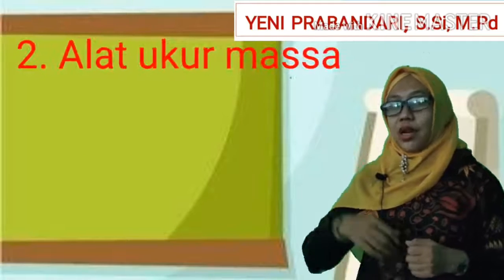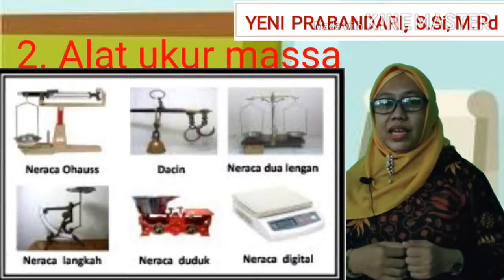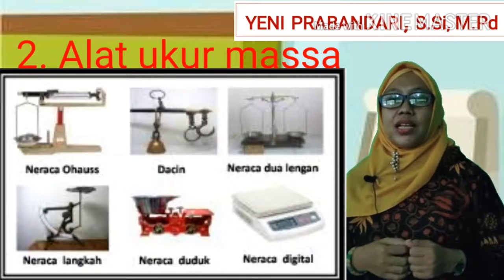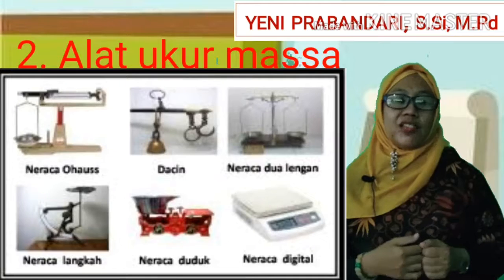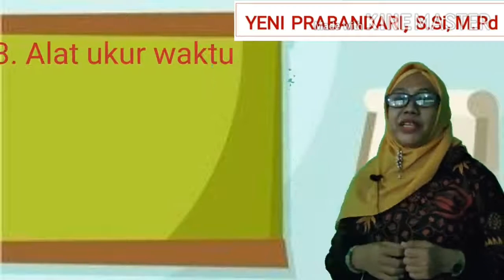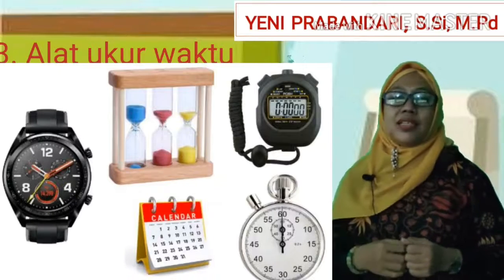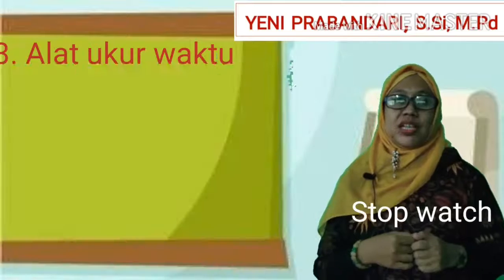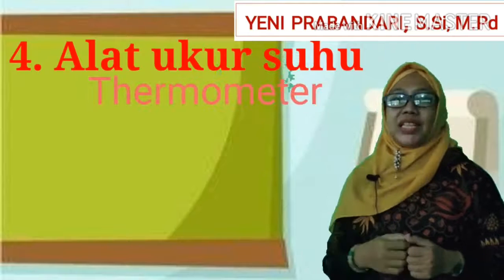Yang kedua adalah alat ukur massa. Ada timbangan pasar yang sering digunakan para pedagang. Kemudian ada neraca, kemudian ada neraca Ohaus, dan ada neraca digital. Yang penggunaannya paling mudah yaitu neraca digital. Kemudian ada alat ukur waktu — ada jam atau arloji, kemudian ada jam pasir, dan ada stopwatch. Yang paling akurat yaitu stopwatch.